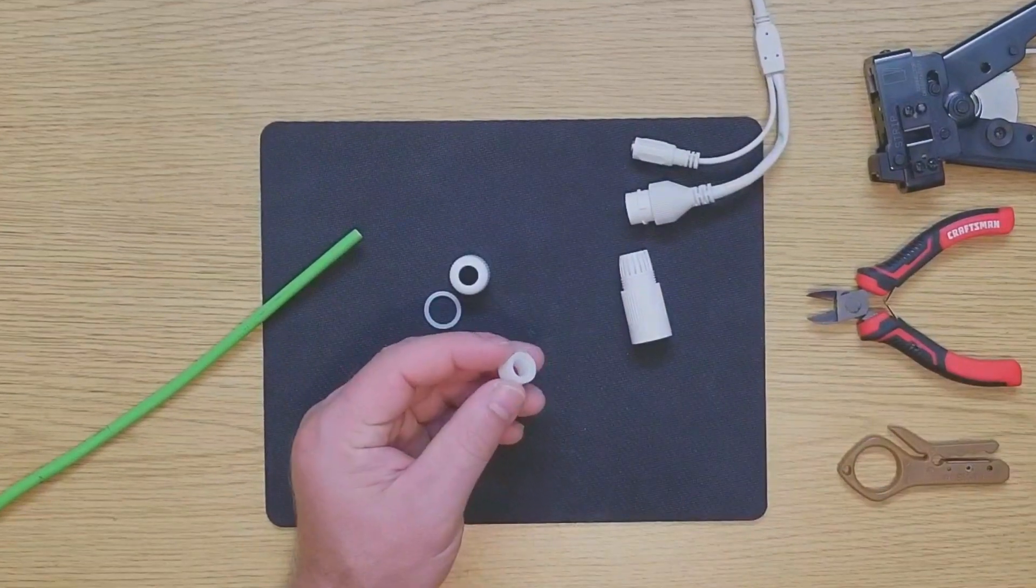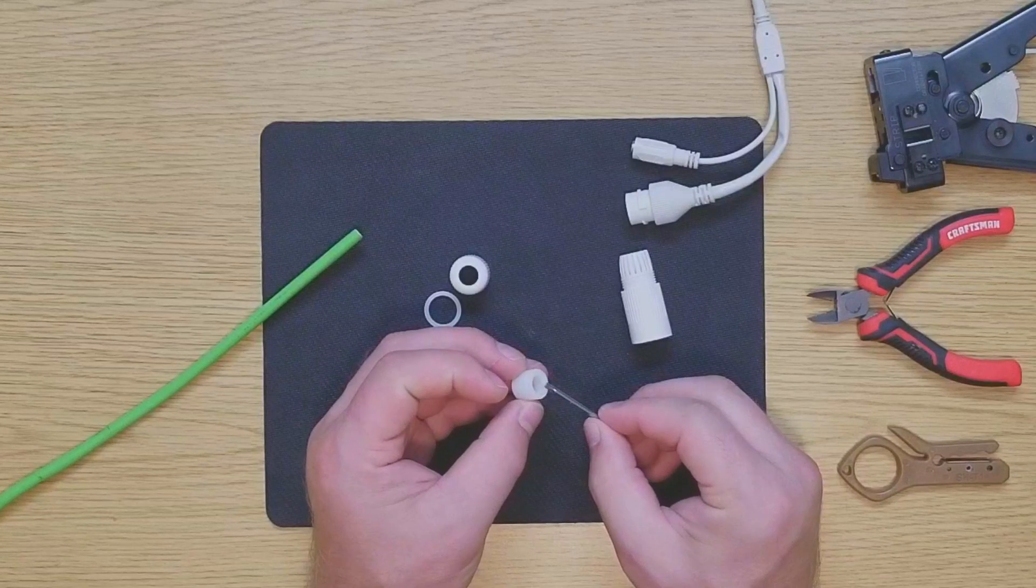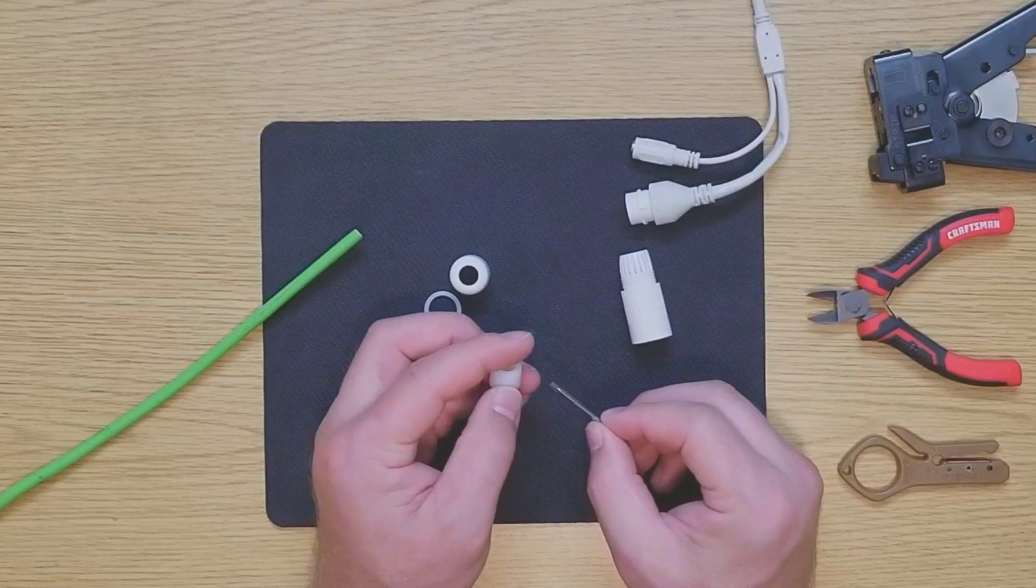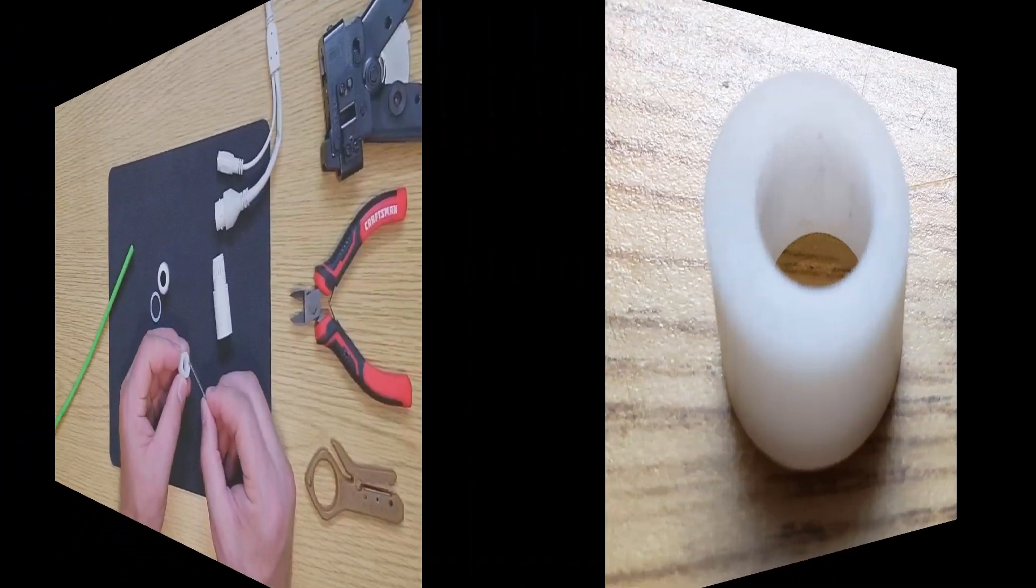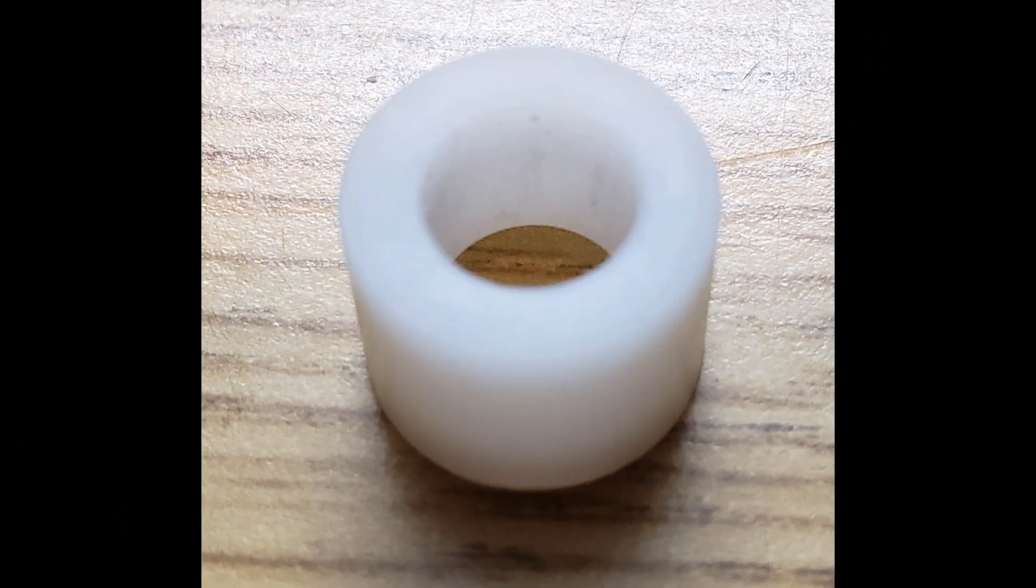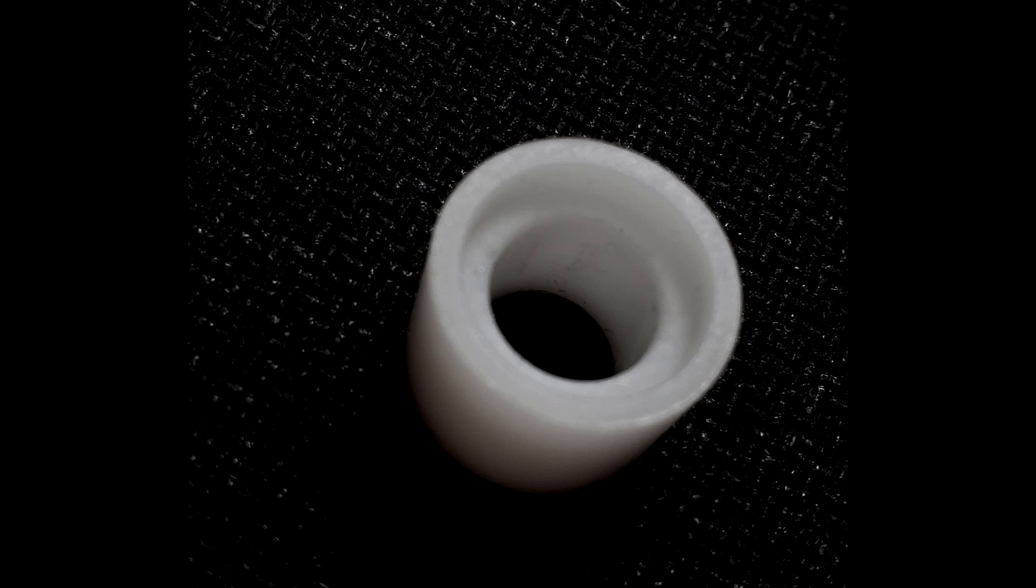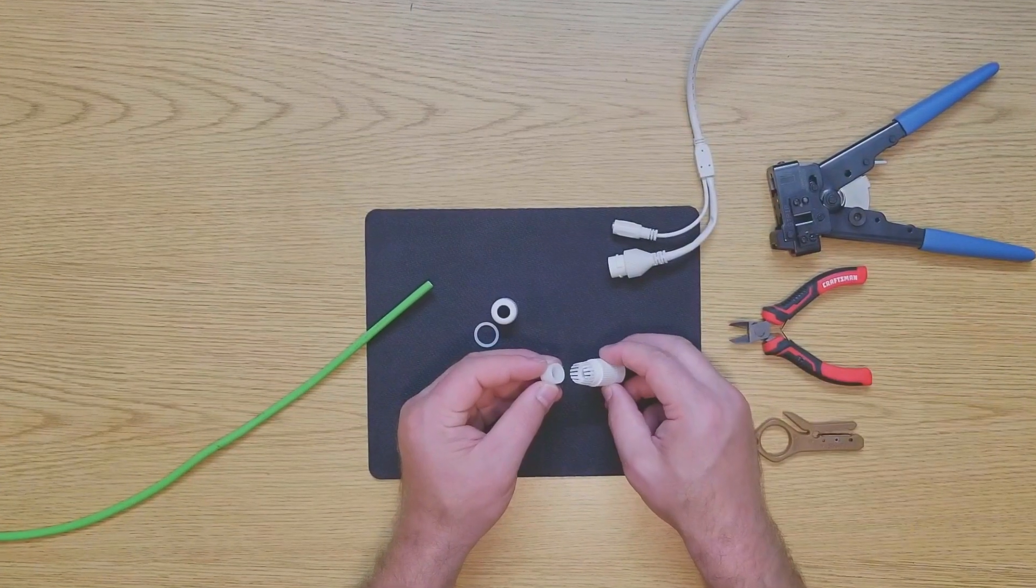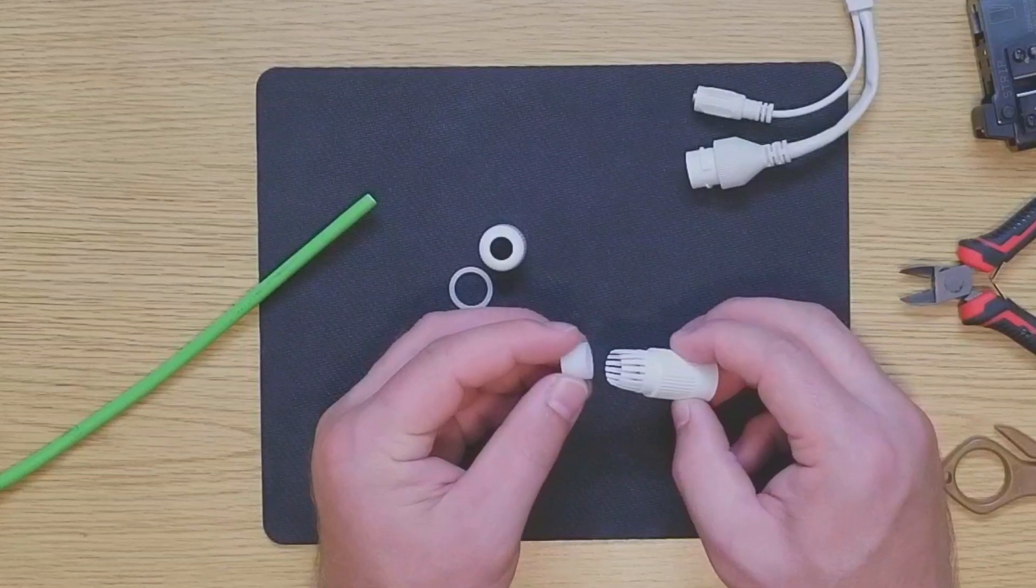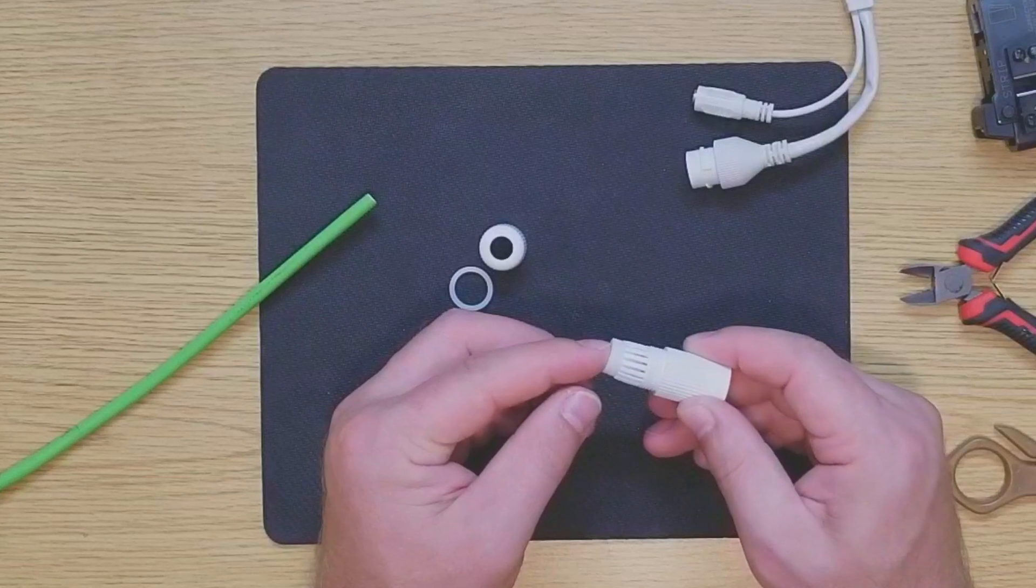When we look at this grommet closely, we see that it has a flat side and also a side with an indentation on it, specifically designed to fit that raised edge that we just saw on the connector body. So when you put this grommet in, it's very important that the indented end go in first so that it mates with the raised ridge inside the connector. Insert it slowly, trying not to bend any of the fingers, and put it completely inside the connector.